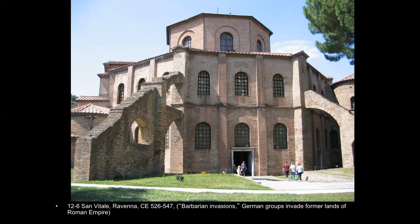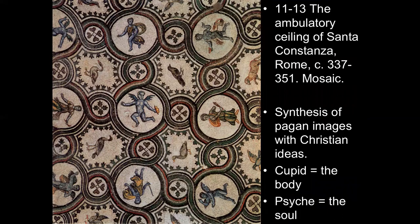This is San Vitale in Ravenna, in a place that was part of the barbarian invasions, but Justinian was able to reoccupy this part of Italy. On the inside we see mosaics — we'd already seen those before with the Christus Sol. What we're seeing here is this idea of taking images that already existed and co-opting them, changing not so much their form but their meaning. It's a synthesis of pagan images with Christian ideas.